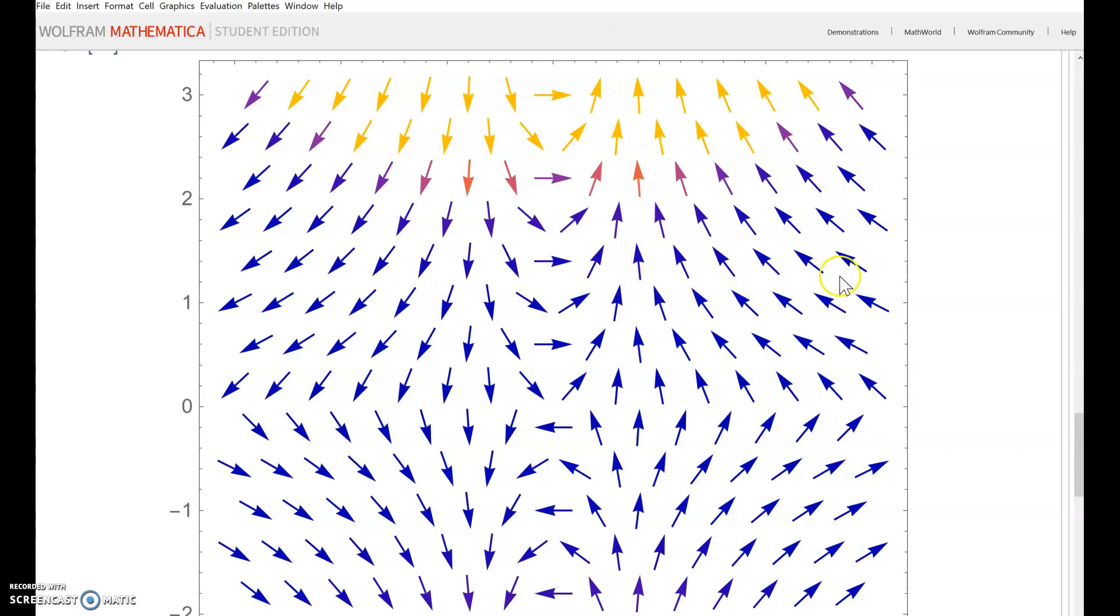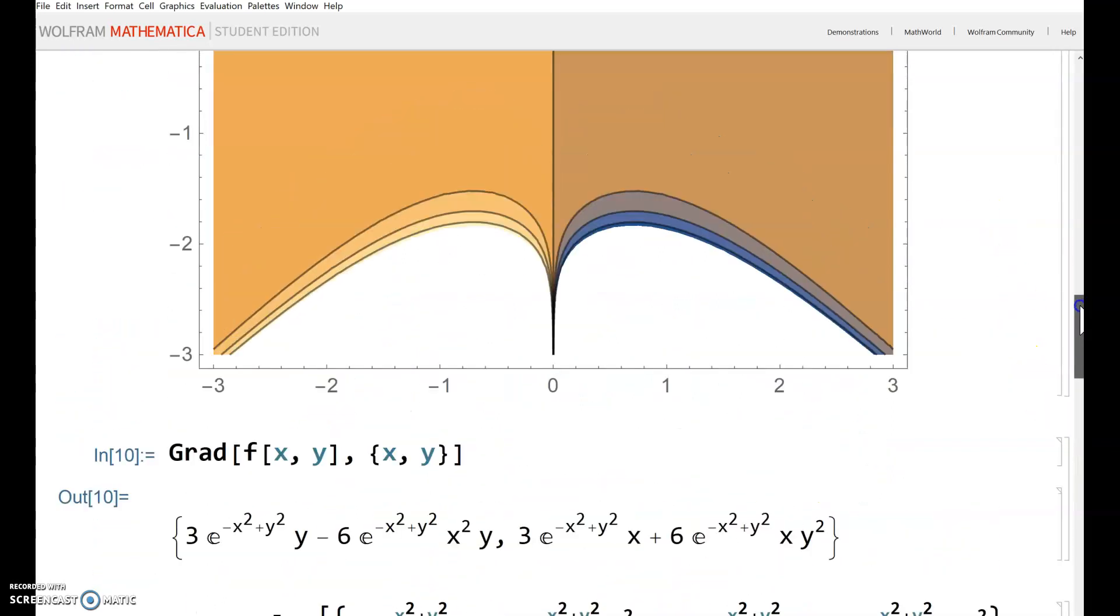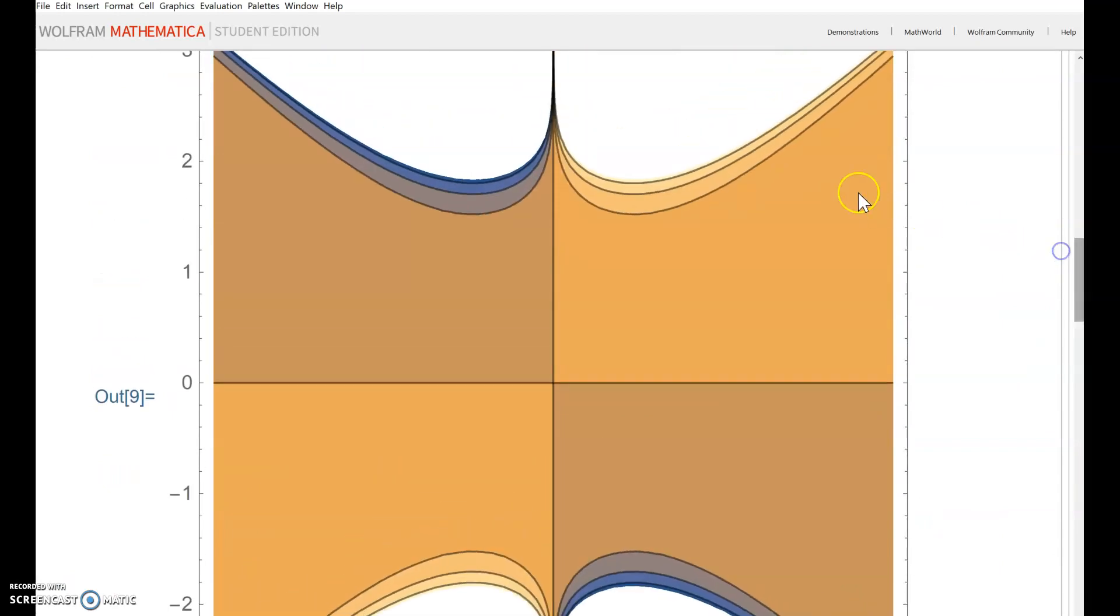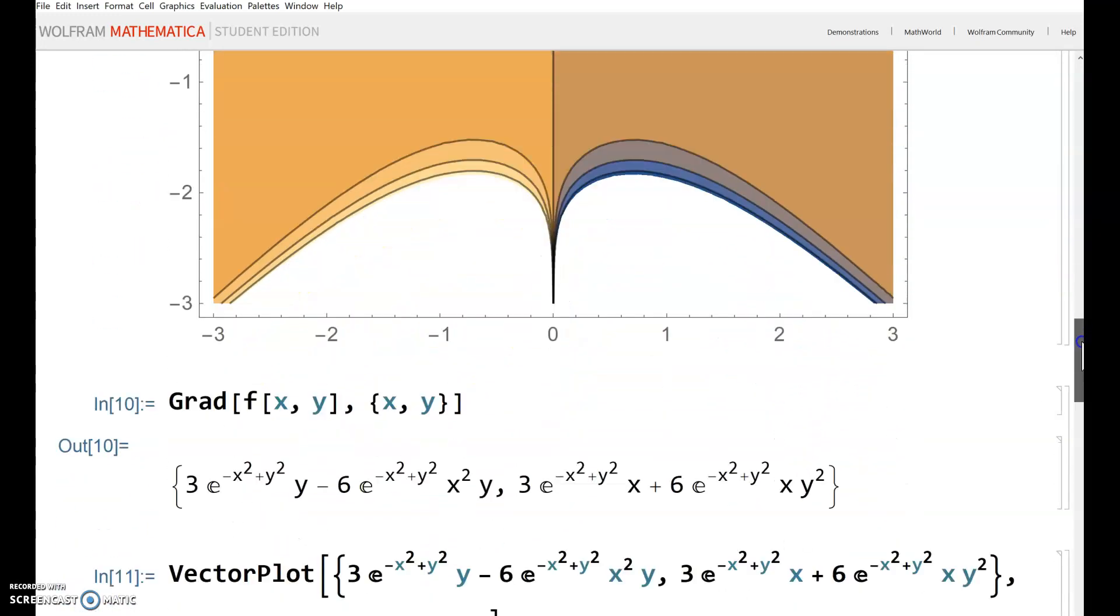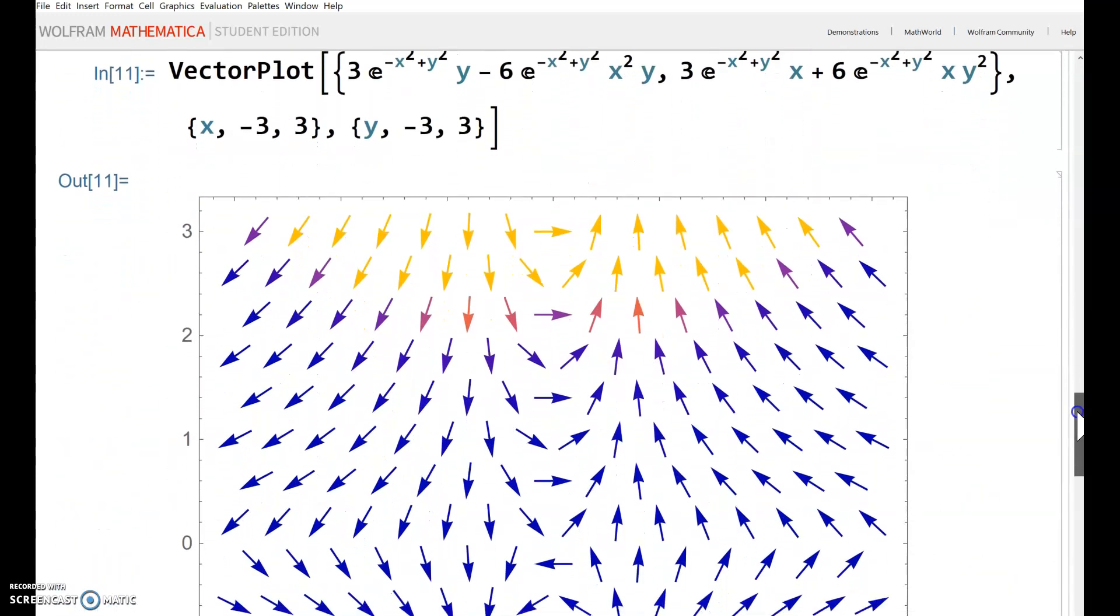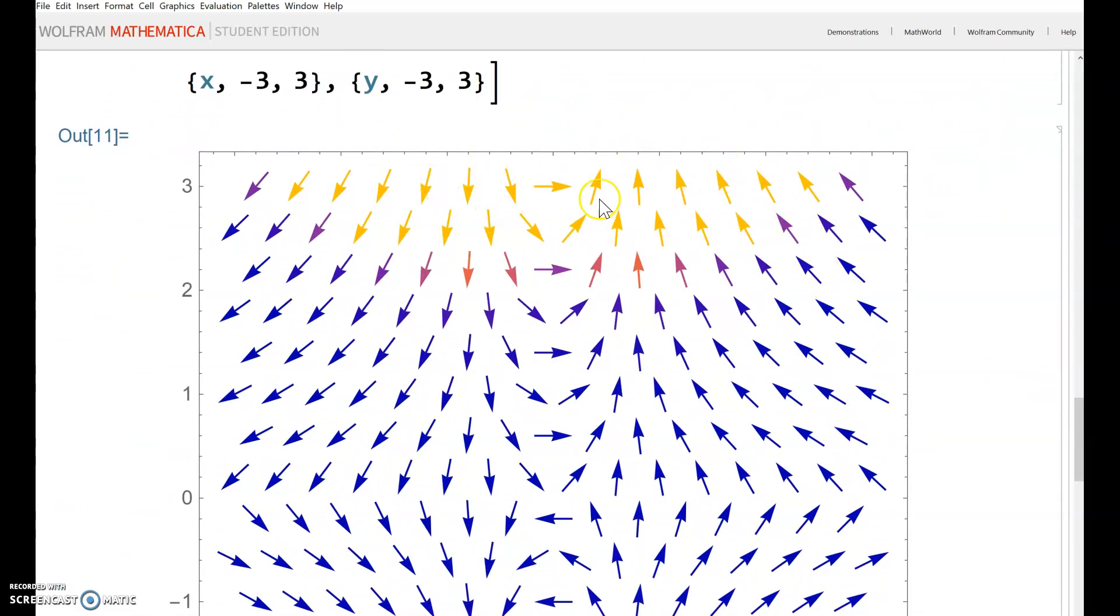In Mathematica, there's color coding. Darker colors mean less steep, while brighter colors—orange and yellow—indicate steeper slopes. We saw this on the contour plot. It's really steep along the edges where y is around 2 and -2. The brighter the color, the steeper the slope.